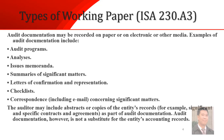Different types of working paper as stated in ISA 230, Appendix 3: we have audit programs, analysis, issues memoranda, summaries of significant matters, letters of confirmation and representation, checklist, and correspondence, which will include emails concerning significant matters.